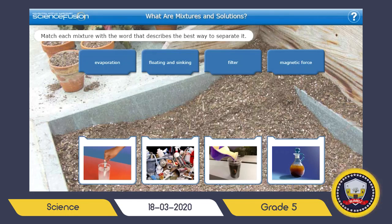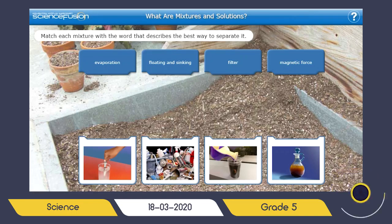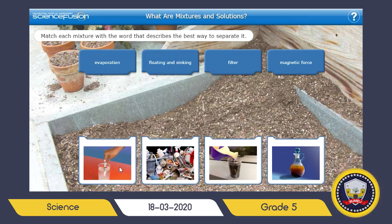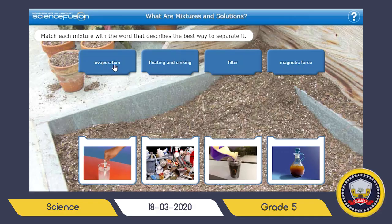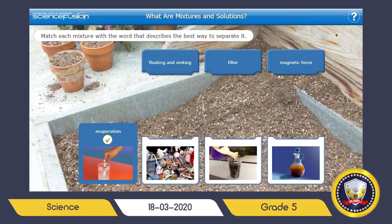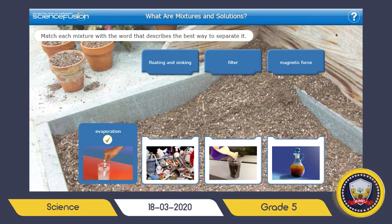Now let's try to solve an example — we are going to match each mixture with the word that describes the best way to separate it. We have: salt water, metal trash, water and soil mixture, and salad dressing with different spices and oil. Salt water is a solution, so we can separate it by evaporation. Metal trash — since some metals are magnetic, we can use magnetic force to separate the metal trash from the other trash.